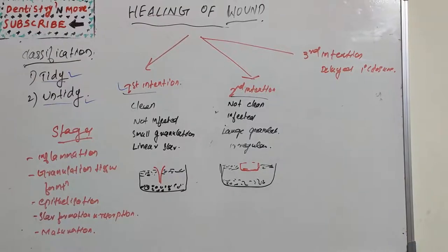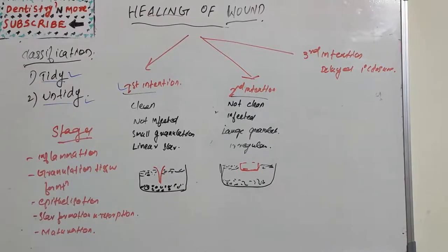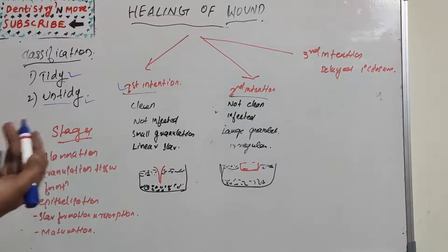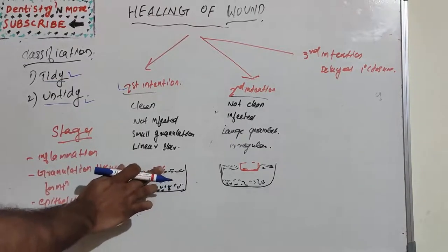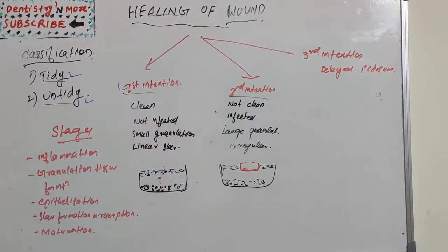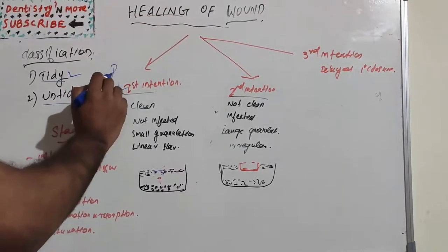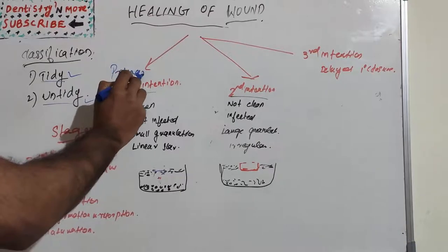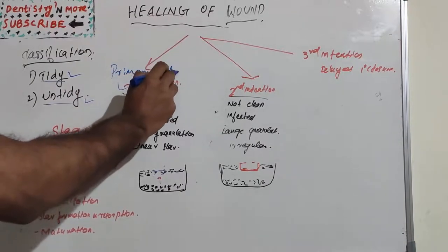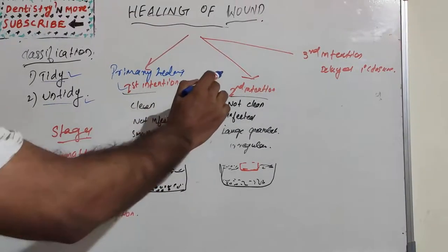In primary intention healing, the epithelium is approximated, there is less granulation tissue, the scar is minimal, and healing is very fast. There is very little fibrous tissue — more granulation tissue is present. Epithelial regeneration happens and there will be complete closure. This is wound healing by first intention, also called primary healing.